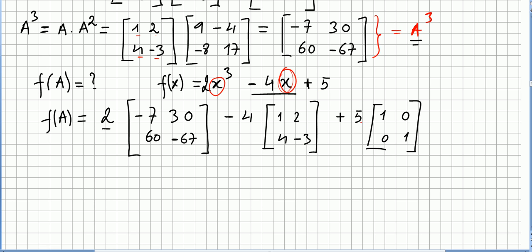And here, what we do is, we put the identity, right? Because it's 5, so 1, 0, 0, 1.